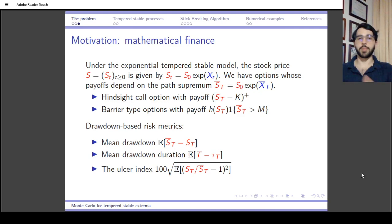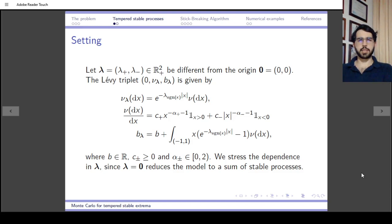In those cases, you sometimes need to price a hindsight call option or a barrier option, and then these extrema appear in the formula. It also appears in drawdown-based risk metrics, such as the mean drawdown, its duration, or the ulcer index.